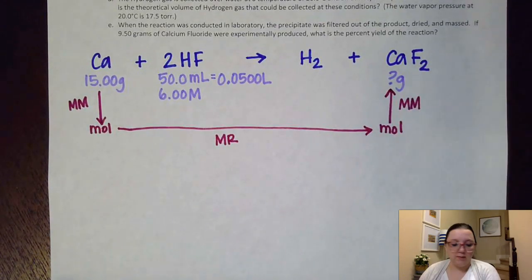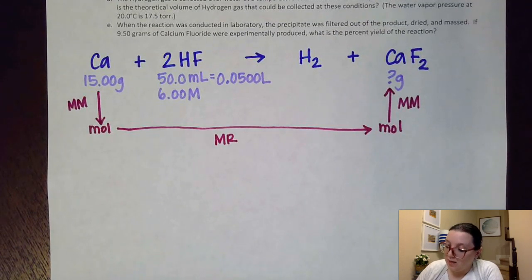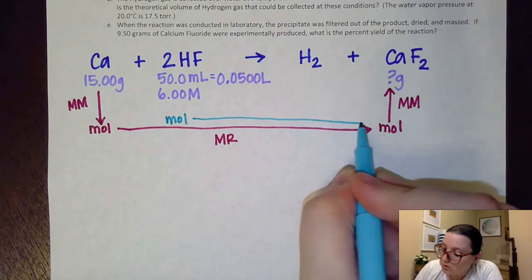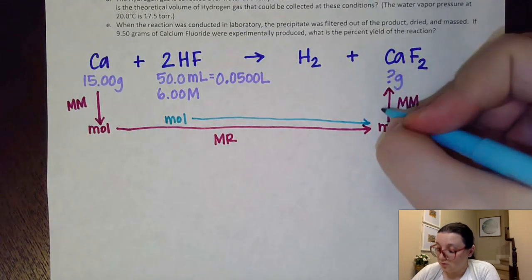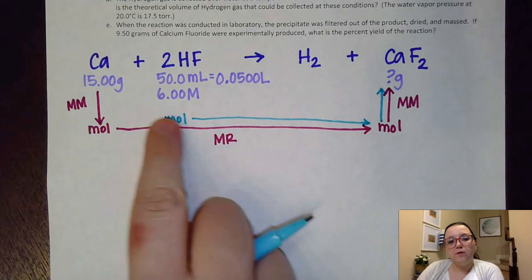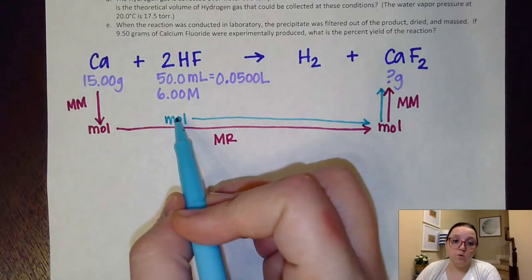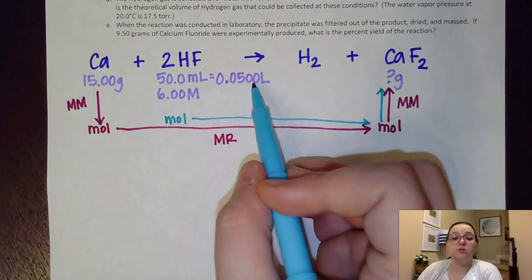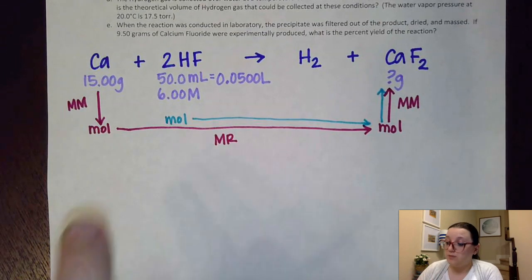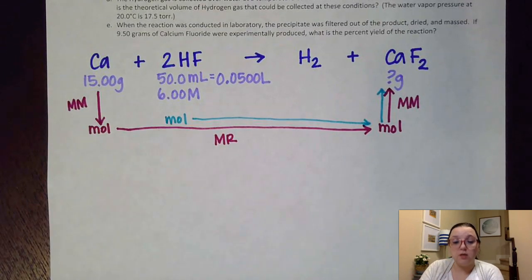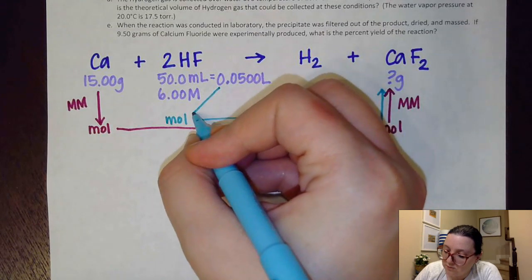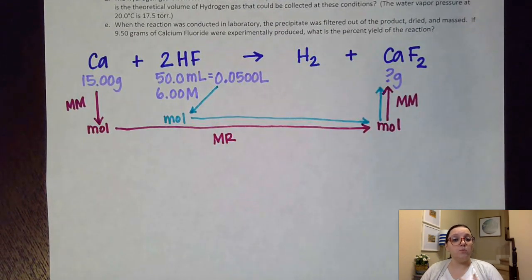I'm also going to lay out the hydrofluoric acid conversion. Again, I need a mole-to-mole ratio and I need to go moles to grams on the product side. On the reactant side, I need to get the volume into moles. You have two options: do a separate molarity calculation to find moles and then start stoichiometry from there, or use molarity as a conversion factor directly between liters and moles — which is the way I'm going to do it.